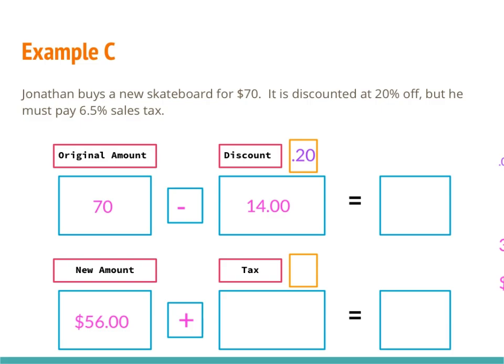Now I find the tax on $56. The tax is 6.5% — although it has a decimal in it, it is still a percent, not a decimal. Moving the decimal two places to the left gives 0.065. I multiply $56 times 0.065 and get $3.64. Adding that to the bill: $56 plus $3.64 gives a final total of $59.64.